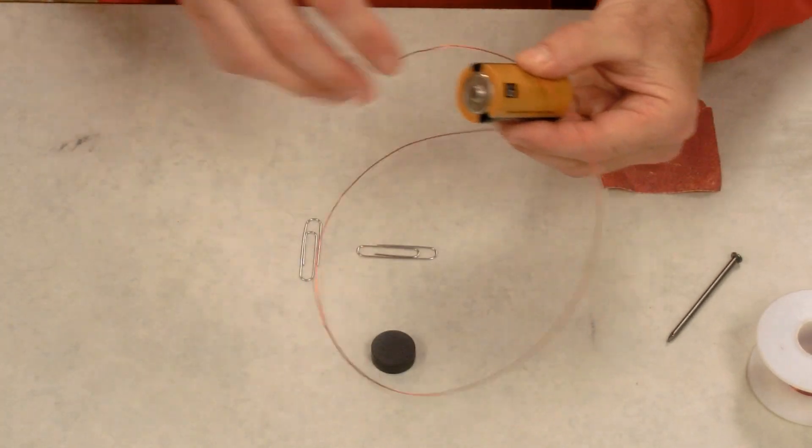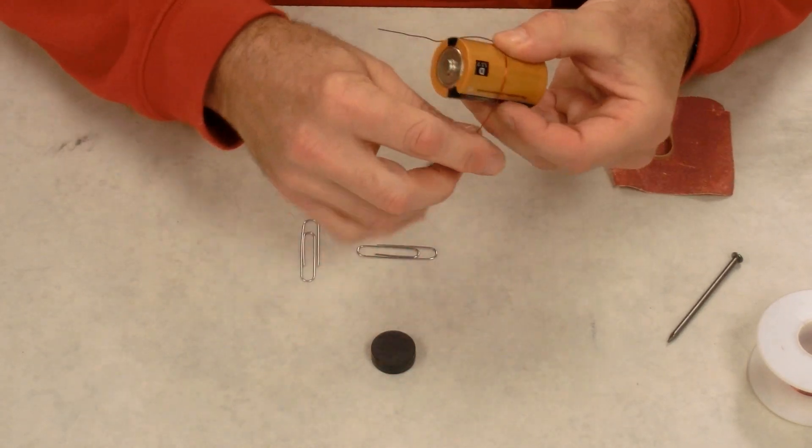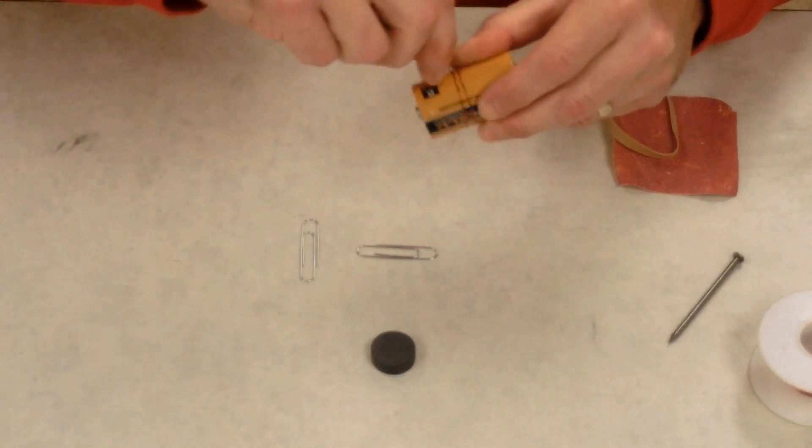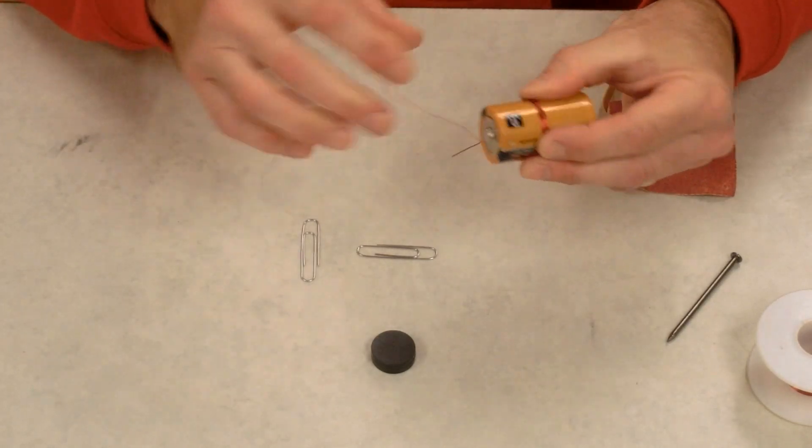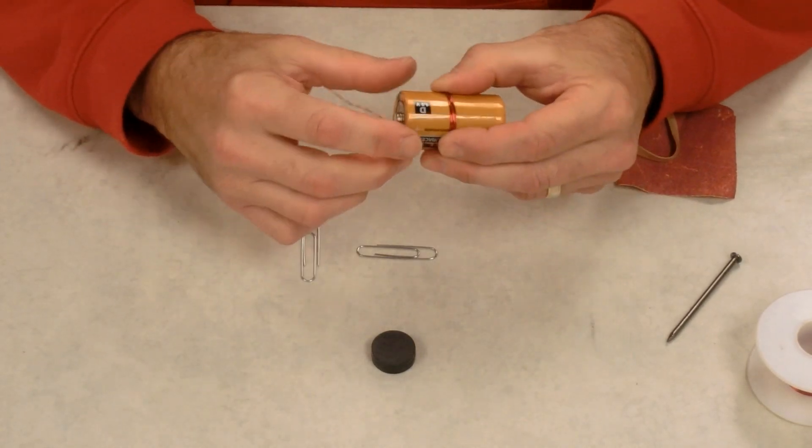So I'm going to take that wire, leave a little bit hanging over the edge, and I'm going to wrap it around one, two, three, four, five, six, seven times. It depends on how long your wire is.